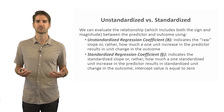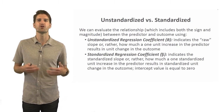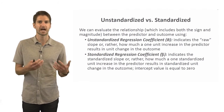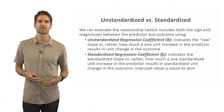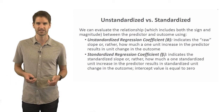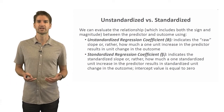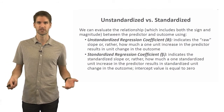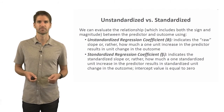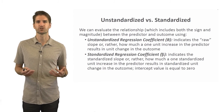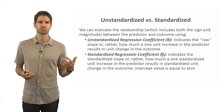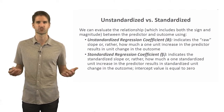A standardized regression coefficient indicates the standardized slope — how much a one standardized unit increase in the predictor results in a standardized unit change in the outcome variable. When looking at standardized regression coefficients, the intercept value equals zero. One standardized unit means one standard deviation unit increase in the predictor relative to the outcome. I recommend using unstandardized regression coefficients for the most part because you get more information — it's in the original raw scaling of both predictor and outcome variable, making it more directly interpretable.